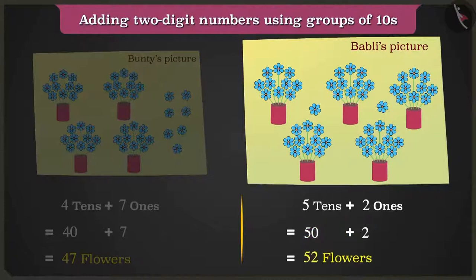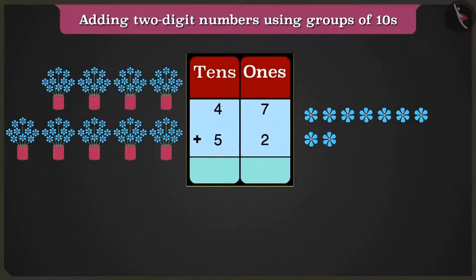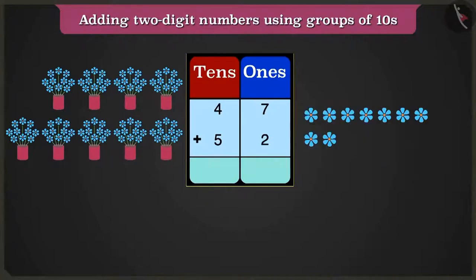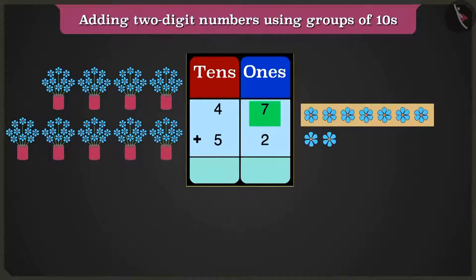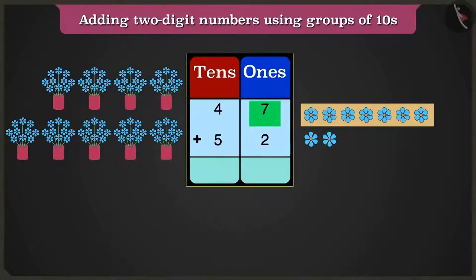To find out the total number of flowers, we will write their number in the table of tens and ones. Now we will first add the number in the ones box. We have to add seven ones and two ones. The count after seven is eight and nine. That is seven ones plus two ones equals nine ones.